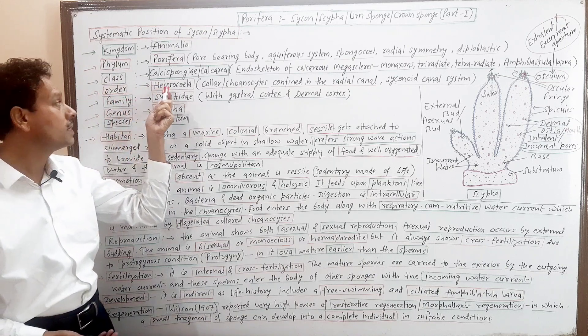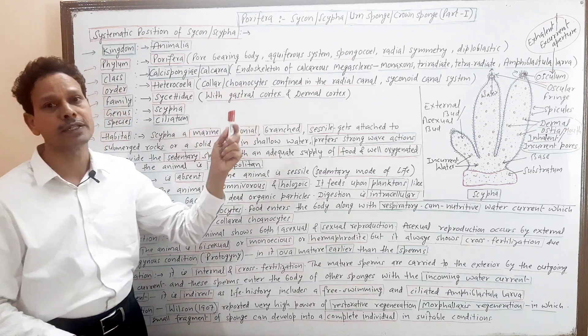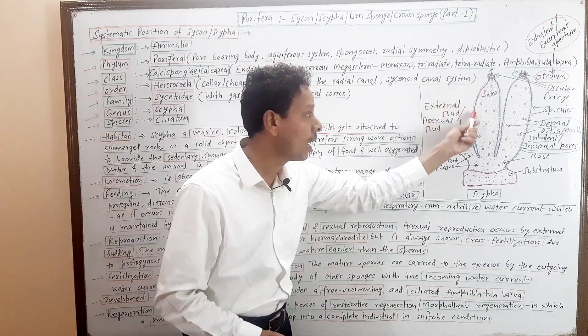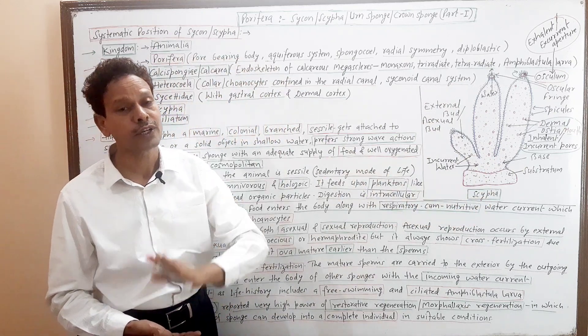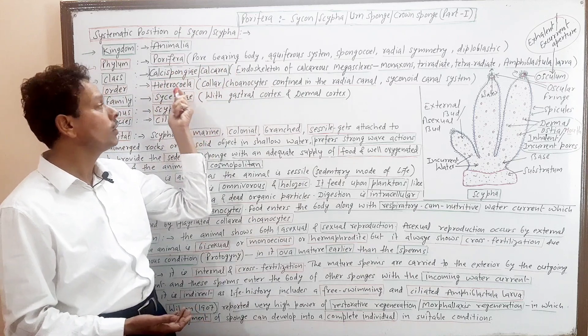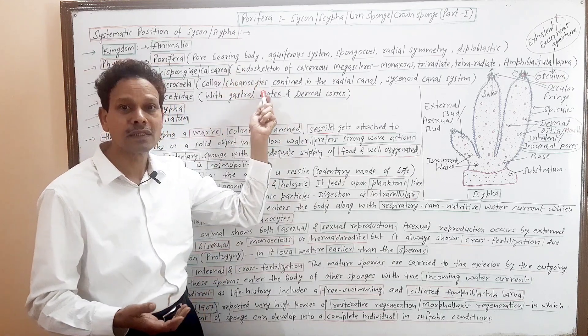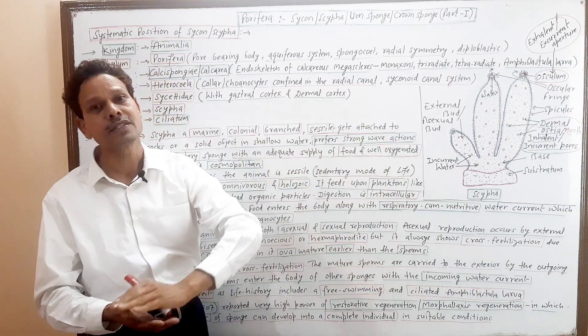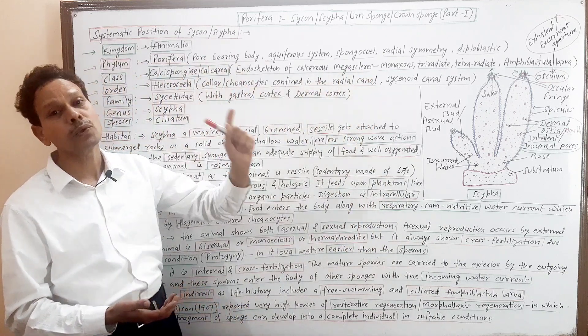The larva which is hollow larva, that is free-swimming larva, and half part of the larval body that is flagellated and half part non-flagellated. That's why it is amphiblastula - both types of cells, flagellated and non-flagellated cells are present. Order Heterocoela - heterocoela means the collar cells, the choanocytes, these special flagellated cells. The entire body is diploblastic, body wall having outer pinacoderm and inner gastral layer. In that gastral layer, special type of collar cells, choanocytes are present.